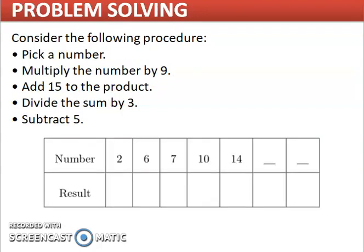Now we consider the following procedure. We pick a number, multiply by 9, add 15 to the product, divide the sum by 3, and subtract by 5. Let us try the number 2.